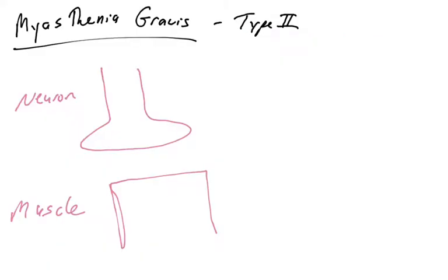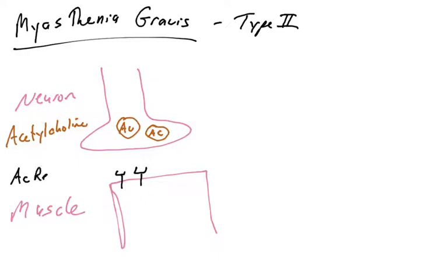Another type 2 autoimmune disorder is myasthenia gravis, which involves signaling at the neuromuscular junction. Neurons have synaptic termini with vesicles filled with neurotransmitters. When an action potential travels down a neuron, the neurotransmitter acetylcholine is released into the synaptic cleft, and acetylcholine binds acetylcholine receptors on the surface of muscle cells, which signal into the muscle cells and regulate muscle contraction.